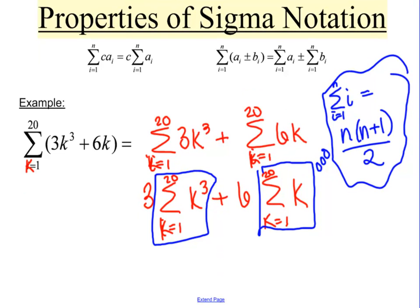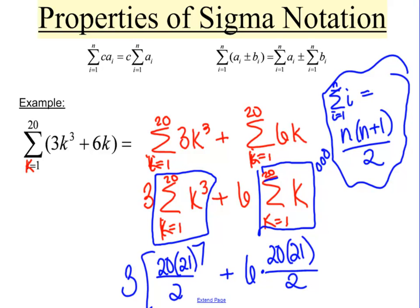So in this case, does it matter that it's k's instead of i's? No, not at all. And so all I want to do then is replace that n with a 20. So I'm going to get 6 times 20 times 21 over 2. And then over here I use the formula for k cubed. And I get 20 times 21 over 2 again, but this time squared.